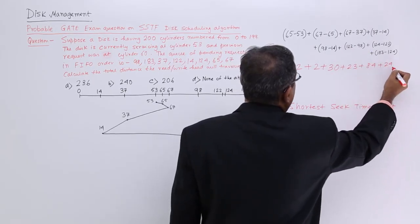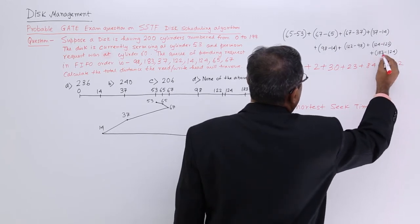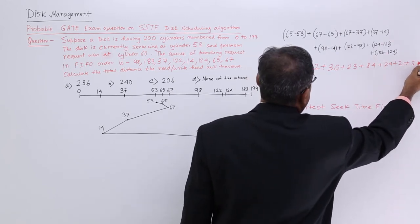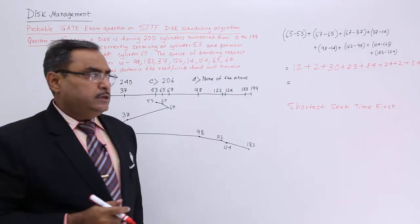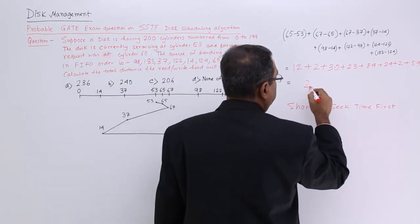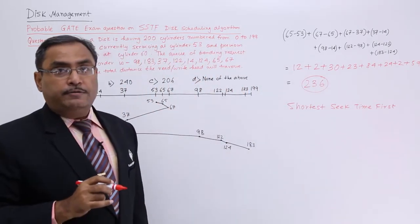Then this one will be 24. Then obviously this is 2, and the last one will be 59. If you go on doing this calculation, you shall get the result as 236, the total read head movement.